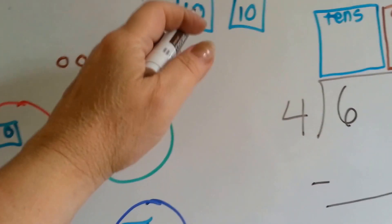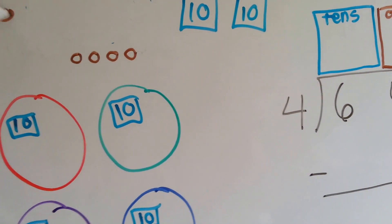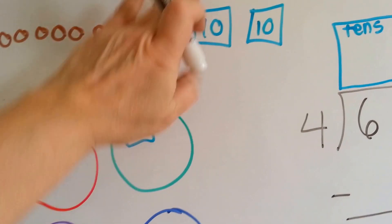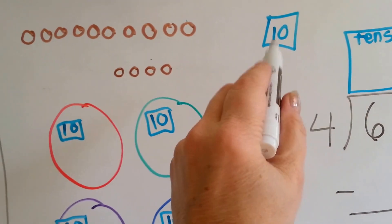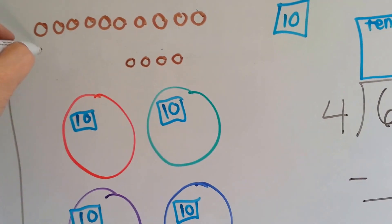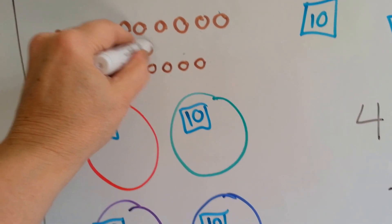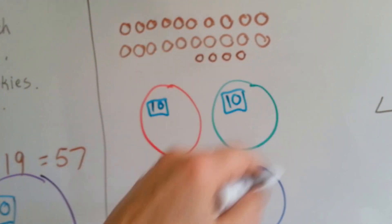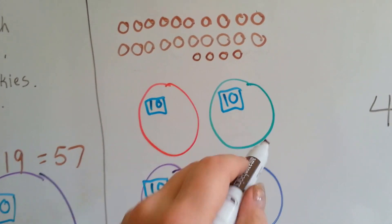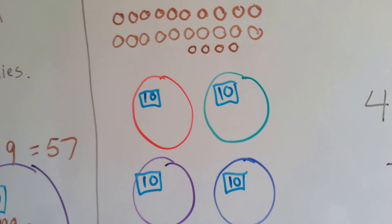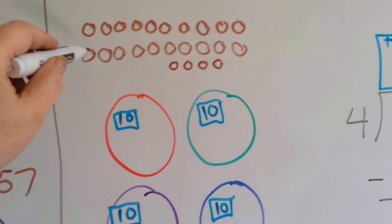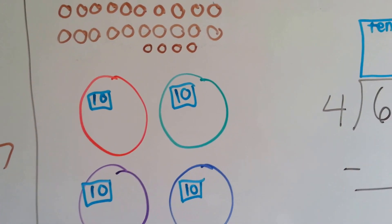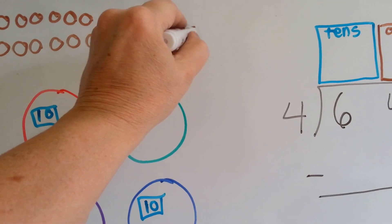We open the first bag — 10 cookies — and the second bag — another 10 cookies. So now both bags are opened. Now we can split these separate cookies. We know there are 10 here, 10 here, and 4 here, which equals 24 that we need to split equally among 4 people.